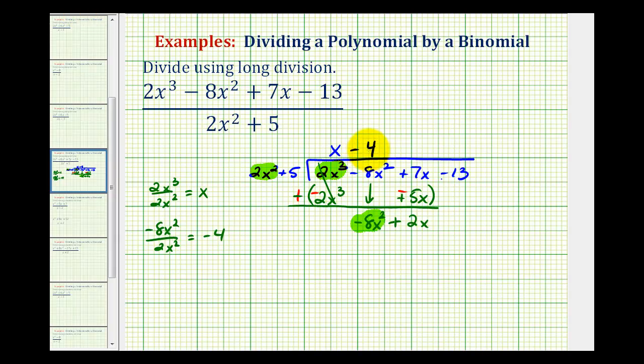And now we're going to multiply negative 4 with our divisor. So negative 4 times 2x² would be negative 8x². And then negative 4 times positive 5 is negative 20. So we have minus 20. And again we're going to write this underneath the constant term in our dividend. So we'll write that over here.